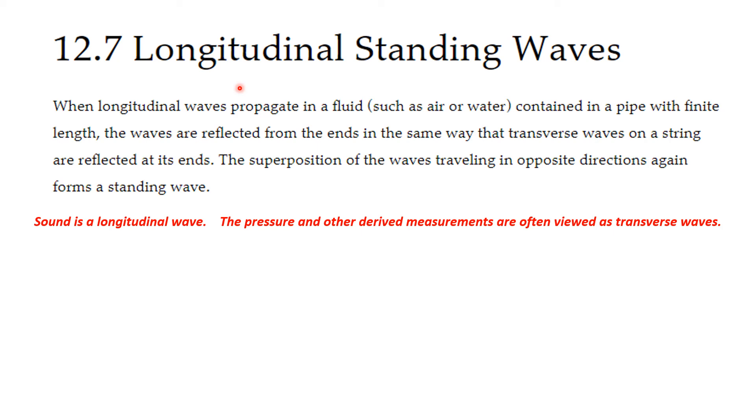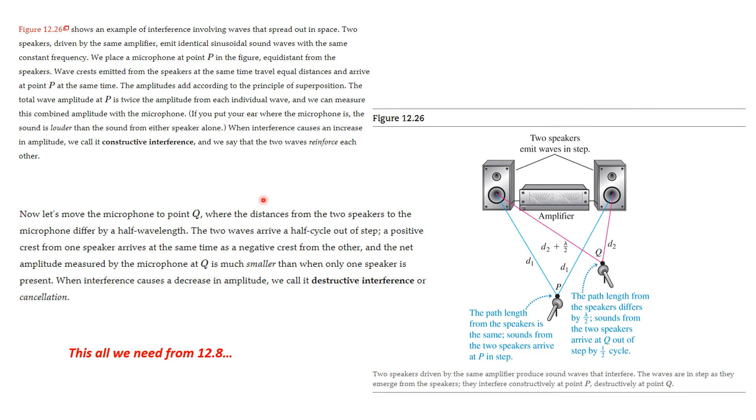We really don't need much from section 12.7, but we're talking about longitudinal standing waves. When longitudinal waves propagate in a fluid such as air or water contained in a pipe with finite length, the waves are reflected from the ends the same way that transverse waves on a string are reflected. This superposition of waves traveling in opposite directions forms a standing wave. Recall that sound is a longitudinal wave, but often sound is measured as pressure against the microphone. Even though this is a longitudinal wave, it will show up as a transverse wave on an oscilloscope.